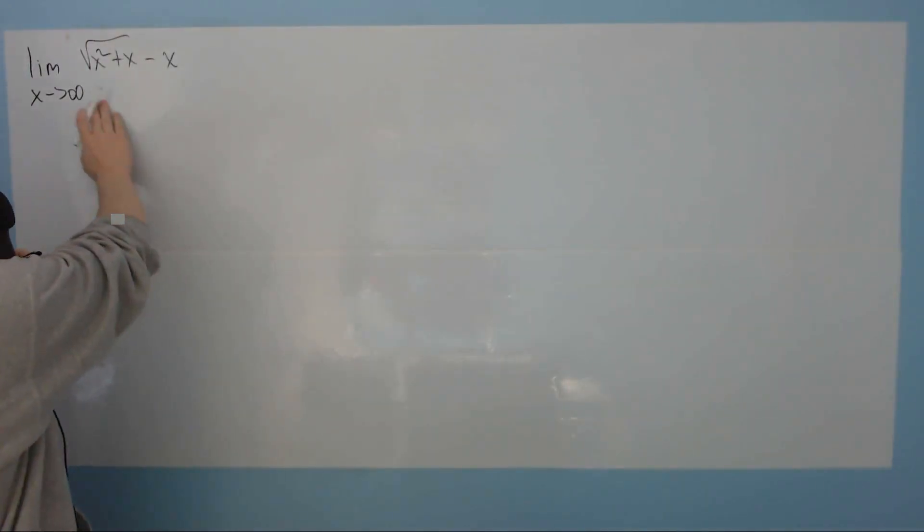The first thing to be observed is that if you pretend for a second to plug infinity into this limit, then you would basically end up with something that looks like infinity minus infinity. You've got to handle this in some other way. So a way is to just work on this expression a lot.